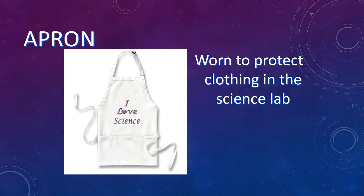Next is an apron. This is worn to protect your clothing in the science lab. This is really up to you whether we wear it, because most of the time if something gets on your clothes you'll just get a small stain. If you're worried about it during the lab, just let me know and I can get you an apron, but most of the time we won't need to wear these.